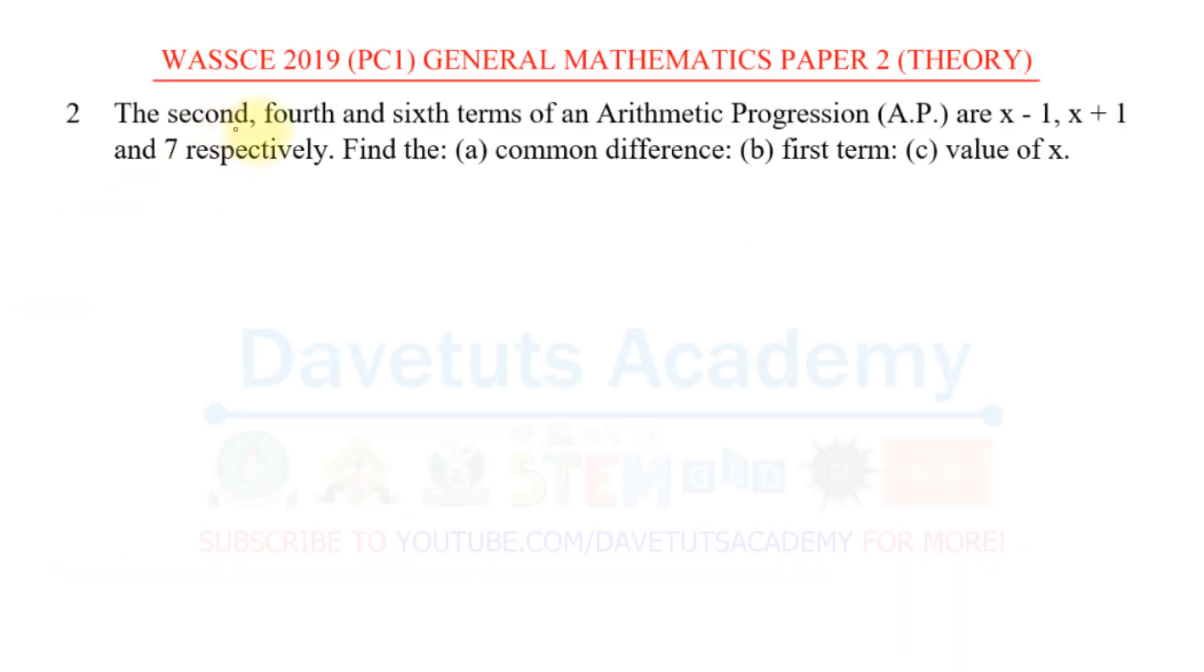The 2nd, 4th and 6th terms of an arithmetic progression (AP) are x-1, x+1 and 7 respectively. We are asked to find the common difference, the first term and the value of x.